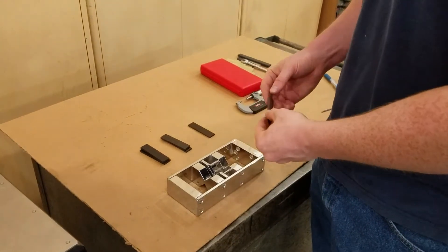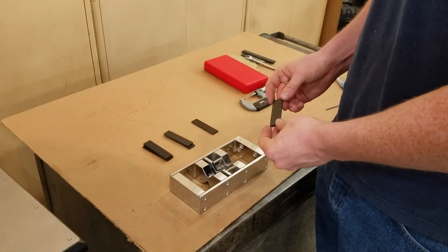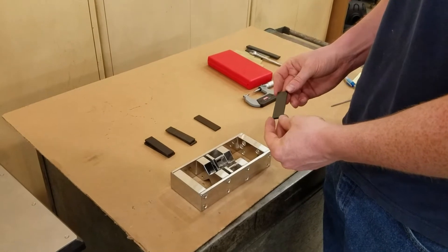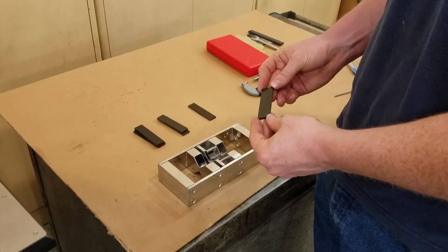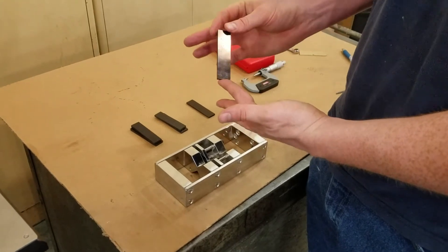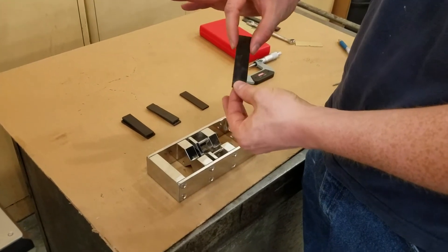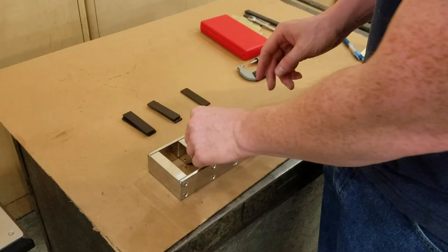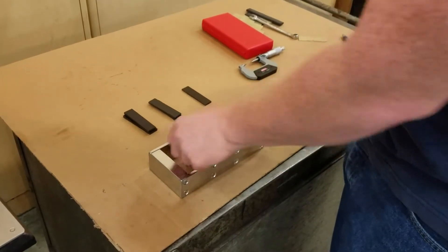Today we're going to demonstrate our TensileCut V-Mill, which makes a sample for ASTM D5379. It takes a blank 3 inches by 0.750 inches, and you insert that blank into your template.